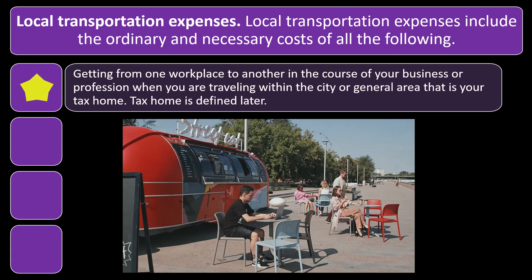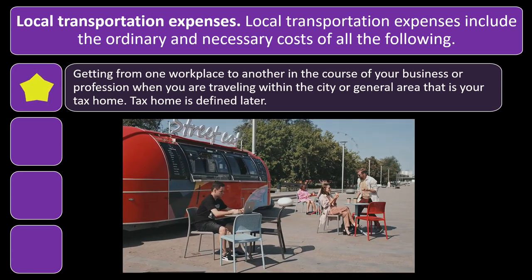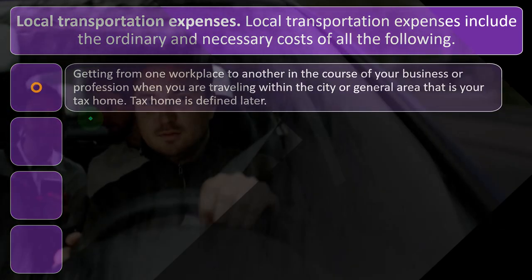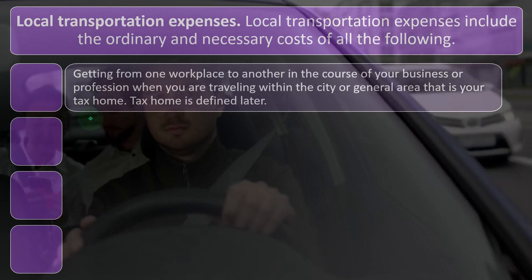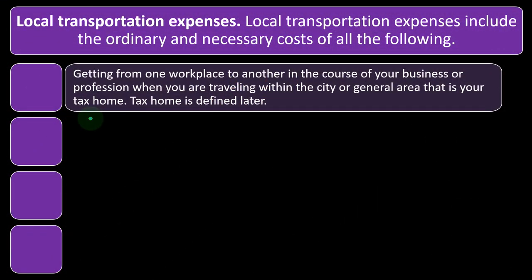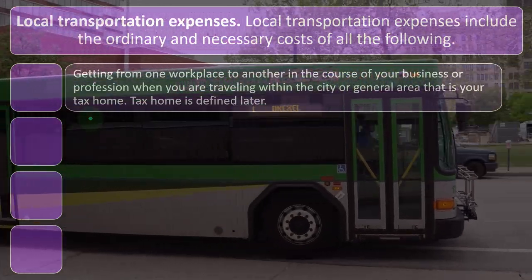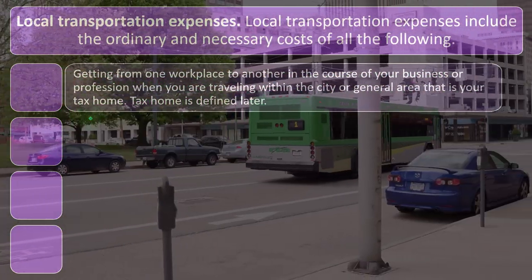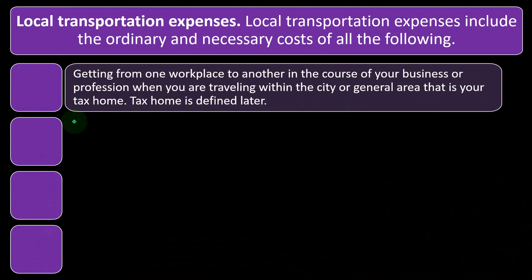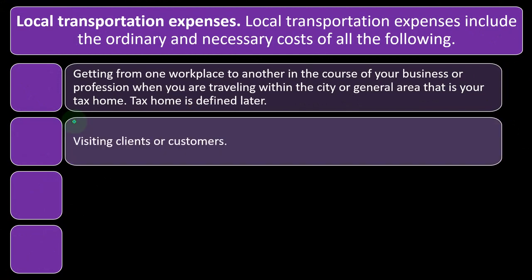Getting from one workplace to another in the course of your business or profession when you are traveling within the city or general area that is your tax home. Generally, the idea is that within the general vicinity of your tax home you're doing local travel, and they're trying to carve out the concept of commuting. One reason for this is that if you were a W-2 employee, as opposed to a sole proprietor, you don't typically get to deduct your commute to your place of employment. So we have to determine what our tax home is to figure out what is going to be a commute and what might not be.